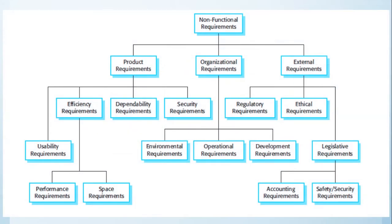Non-functional requirements have a lot of dimensions. You have product requirements, organizational requirements, and external requirements. Product requirements include things like efficiency, usability, performance, and security standards. Organizational requirements might include how the software interacts with the environment, operational requirements, and development requirements needed by the organization as a whole. External requirements include your regulators, legal and legislative requirements, safety and security requirements, accounting requirements, and ethics considerations. This is a very broad spectrum — I just want to give you a sense of the kinds of areas you need to look at when identifying non-functional requirements.